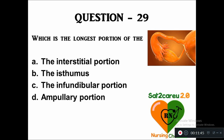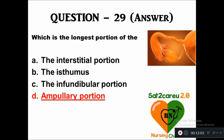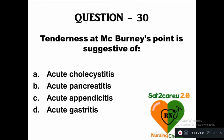Question 29: Which is the longest portion of the fallopian tube — option A: intestinal portion, B: the isthmus, C: the infundibular portion, D: the ampullary portion. The right answer is the ampullary portion is the longest portion of the fallopian tube.